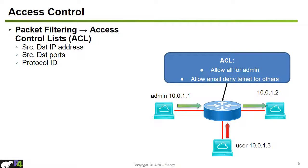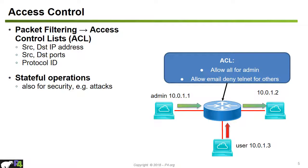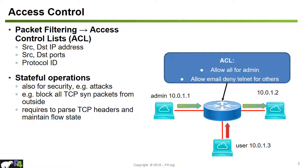Access control operations can be quite complex. To detect security attacks, they are mostly stateful. For example, we would like to block all TCP SYN packets from the outside to prevent TCP SYN flooding attacks. That requires parsing TCP headers and maintaining per-flow state information in order to detect the TCP state of the connection and identify when an attack is happening.